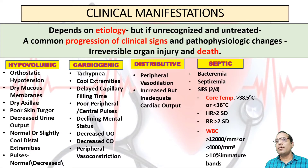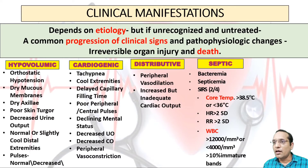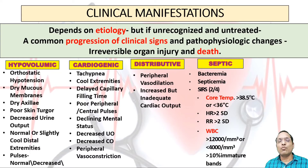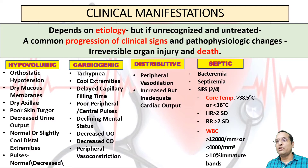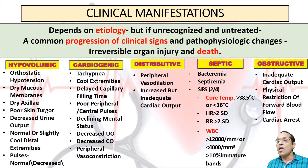In septic shock, there is bacteremia or septicemia. Systemic inflammatory response syndrome is defined by two or more of the following: core temperature more than 38.5°C or less than 36°C, heart rate more than two standard deviations above normal or tachycardia, respiratory rate more than two standard deviations above normal for age and sex, and white cell count more than 12,000 or less than 4,000 per millimeter cube, or more than 10% immature band cells. In obstructive shock, there is inadequate cardiac output with physical restriction of forward blood flow.